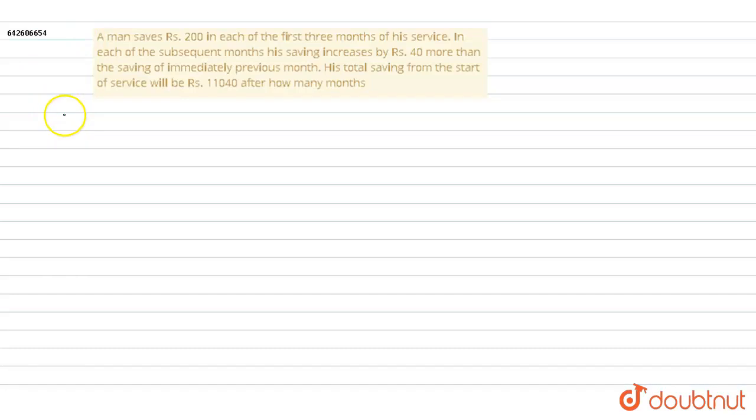We'll first write the savings. Savings are: for the first three months, the savings are Rs. 200. So, 200, 200, and 200. And after this, his savings increase by Rs. 40.